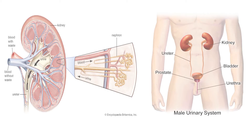In the kidneys, nephrons are the functional unit. These nephrons act as filters for the blood, so as to get rid of the waste material from the blood.